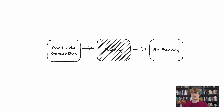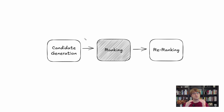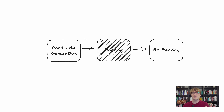Modern recommendation systems really have three stages: candidate generation, ranking, and re-ranking. What we've been talking about so far is ranking — taking a bunch of videos and applying an ML model to score them, which results in an ordering to return to our clients. But ranking can't really scale to billions of possibilities as we've just seen. It's just too time consuming and resource intensive. We need a better way.